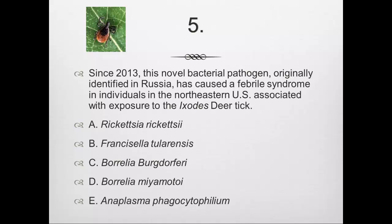Most people chose D, Borrelia miyamotoi, which is indeed the correct answer. Let's learn about Borrelia miyamotoi: it is a new and potentially emerging pathogen. The first case in North America was reported in 2013; first human cases were identified in Russia in 2011. It was previously considered a non-pathogenic species. Cases have centered in the northeastern United States, including New England, related to its association with Ixodes ticks. Fewer than 60 cases have been reported in the U.S.